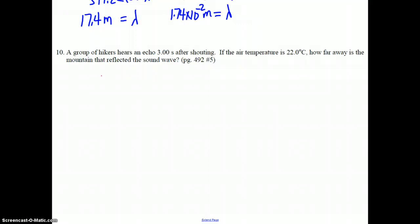So we go ahead, we start off with our 331 meters per second at STP. We add 0.6 times 22 degrees Celsius above STP, and that gives us a speed of 344.2 meters per second.